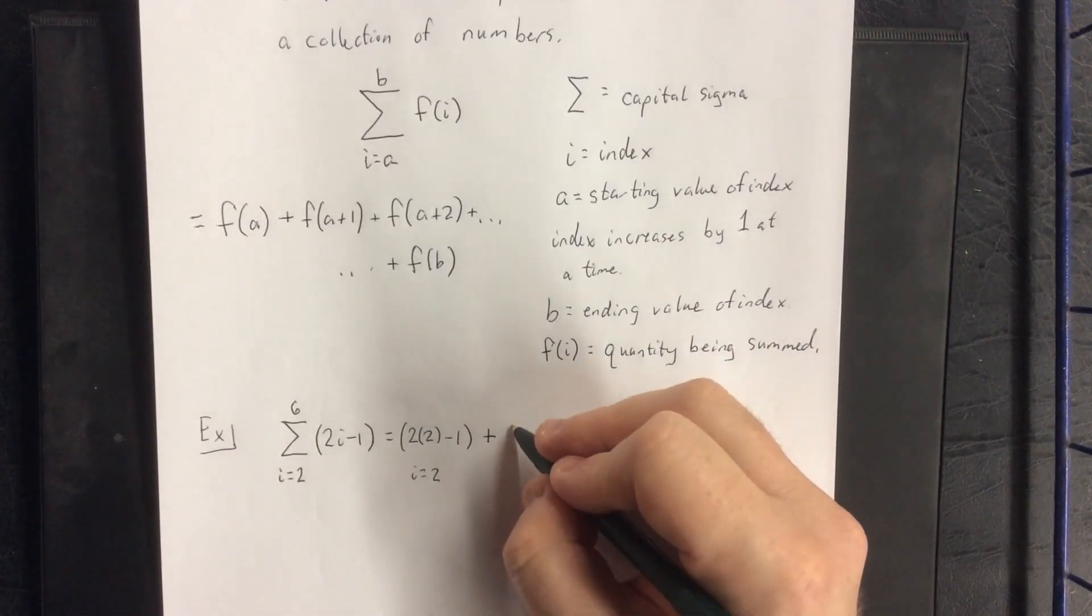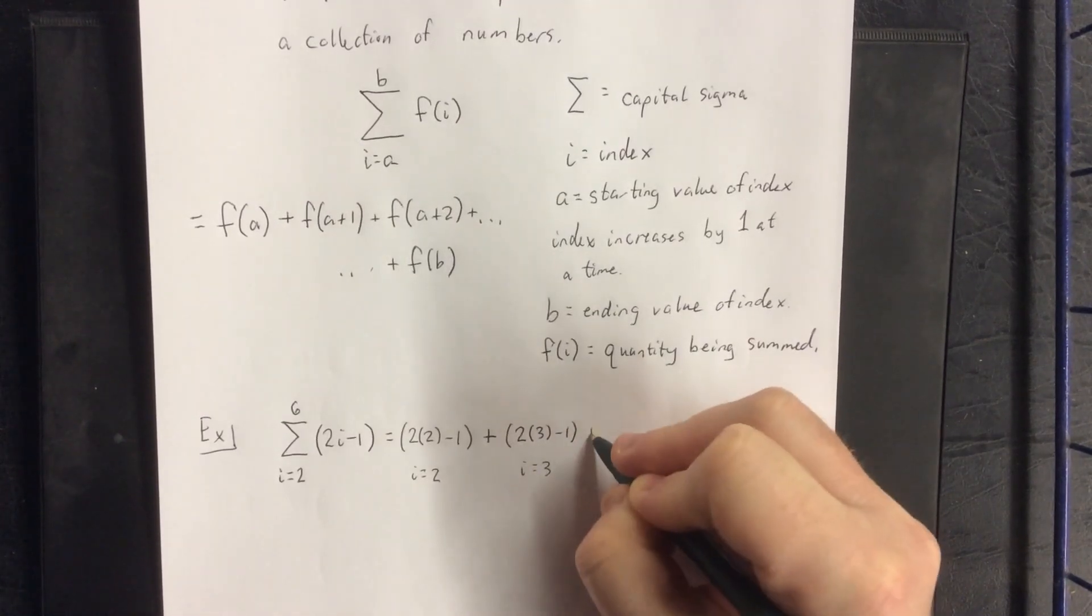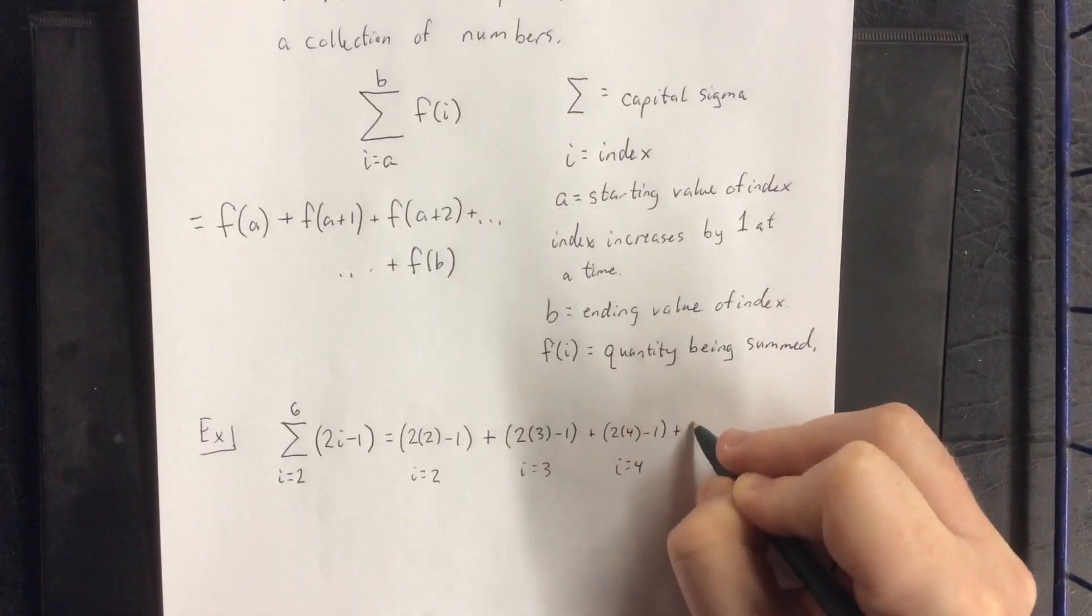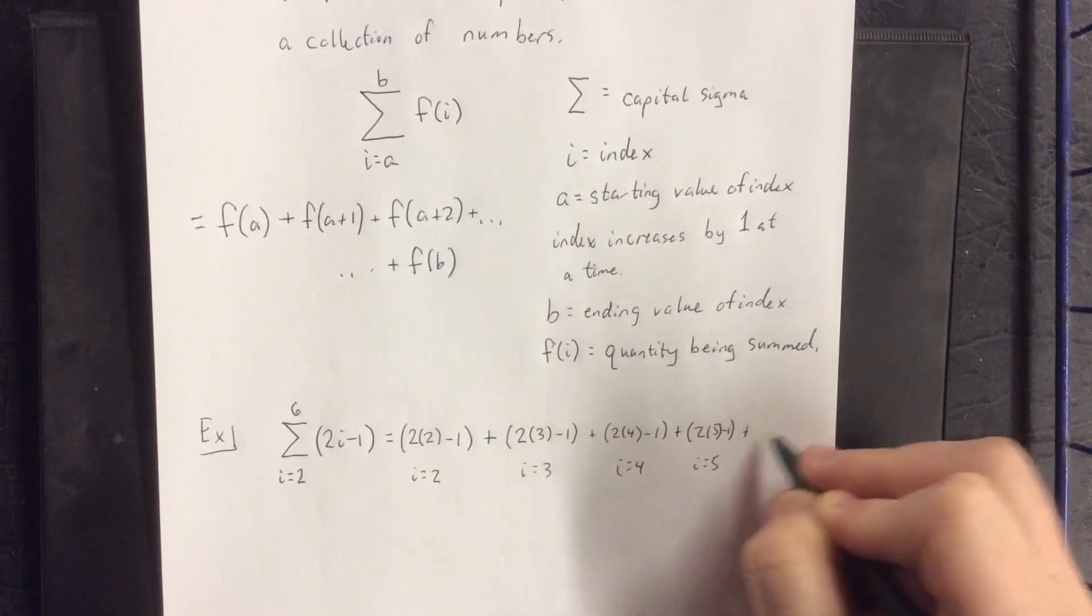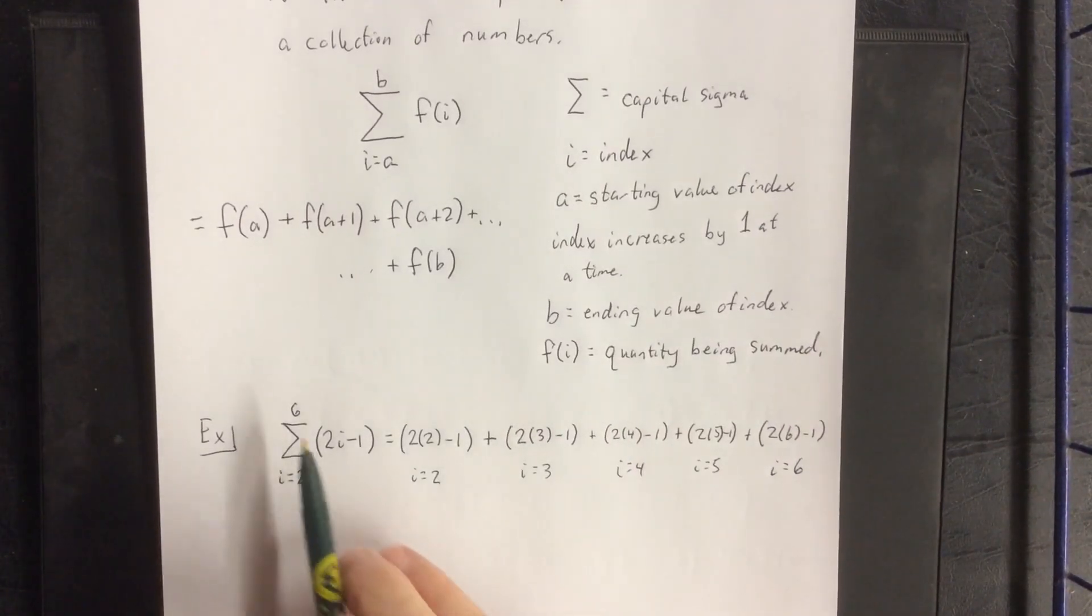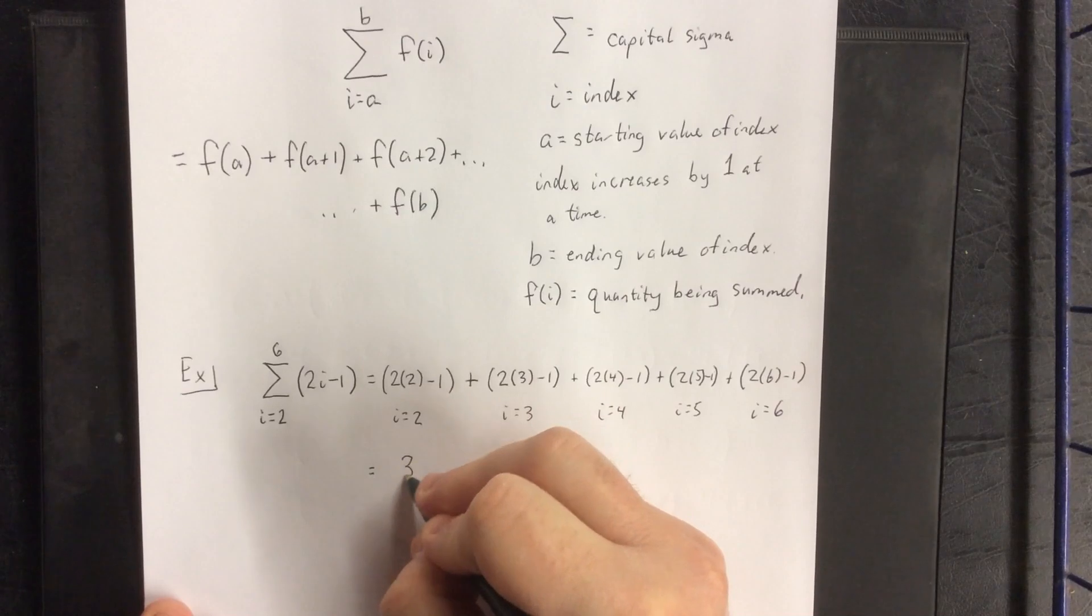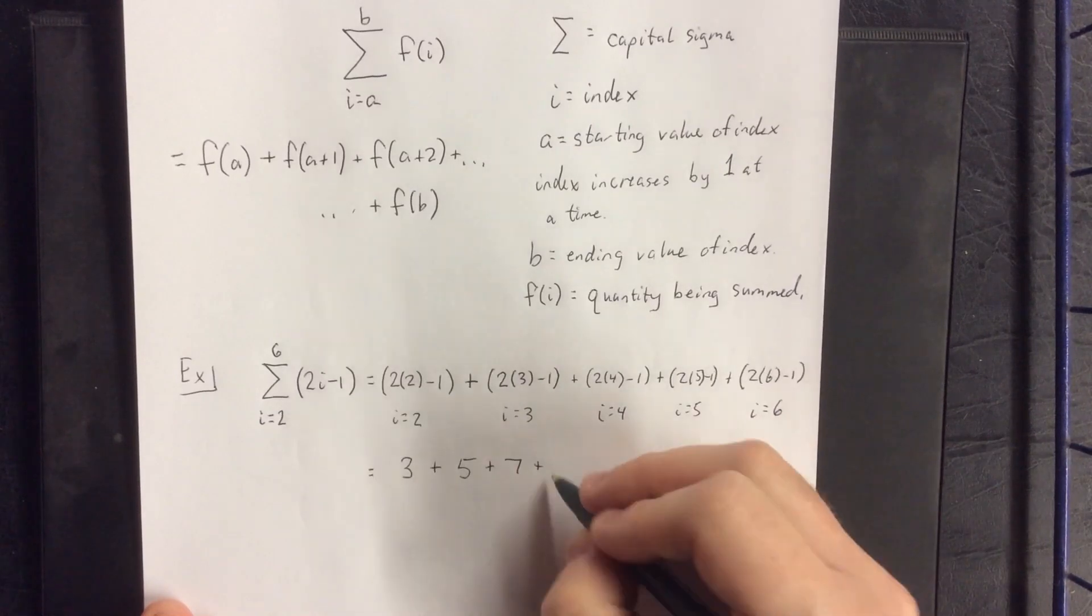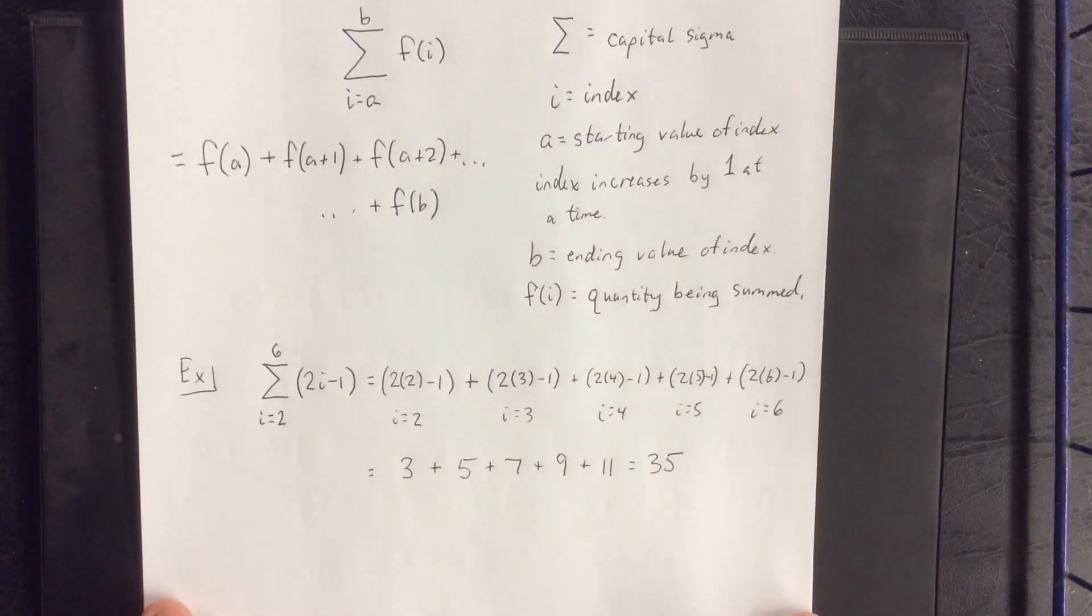Since we just did two, next we do three. Then we do four. Then five. Then six. And six is where I stop because that's the value that's indicated at the top of the summation notation. So this would be three plus five plus seven plus nine plus eleven. And some quick arithmetic lets me know that that is equal to thirty-five.